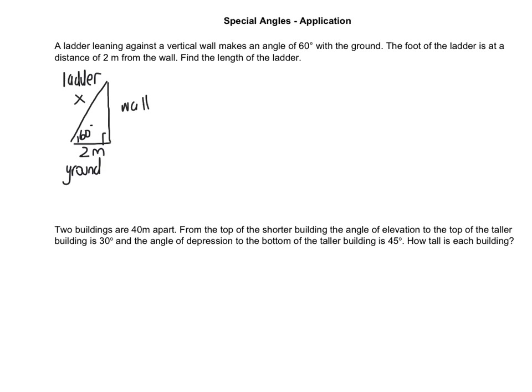In grade 10, we started with drawing the diagram, which we did. Now, using our reference angle, which is the 60, I'm going to label the wall as opposite, the ground as adjacent, and the ladder as the hypotenuse. I want to figure out if I want to use sine, cos, or tan. In this scenario, we're given the adjacent side — that 2 meters — and we're looking for the hypotenuse, which is x. So, adjacent and hypotenuse means we're using cos. I'm going to write cos of 60, that's my reference angle, equals my adjacent side, which is 2, over my hypotenuse, which is x.